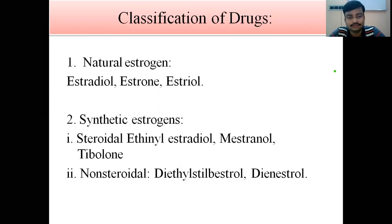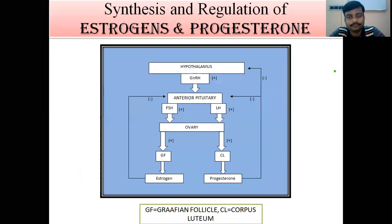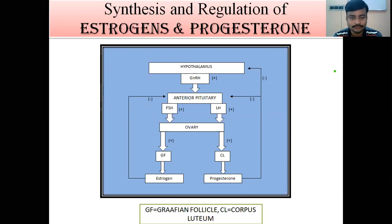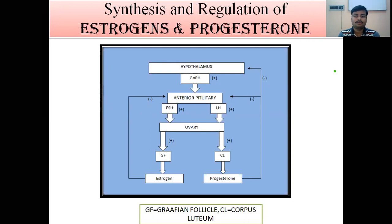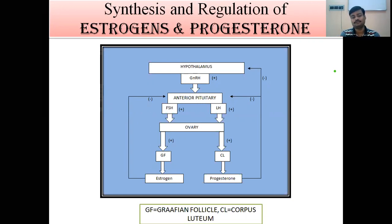One of the most important topics is the synthesis and regulation of estrogen and progesterone. The hypothalamus is the most important part which initiates the synthesis process. It releases the gonadotropin-releasing hormone, GnRH, which acts on the anterior pituitary.